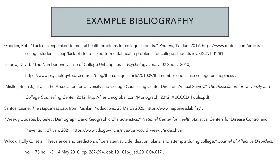The other type of common source is a source that comes from an academic journal that you might find on a database, such as the final one there listed by Holly Wilcox. For that one, you provide a little bit more information: the author, the title of the article, the journal, the volume and issue number, the date followed by the page range, and then the DOI.